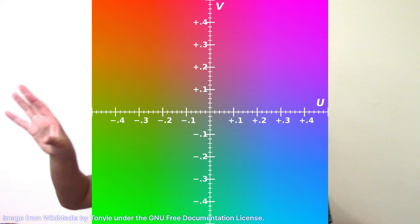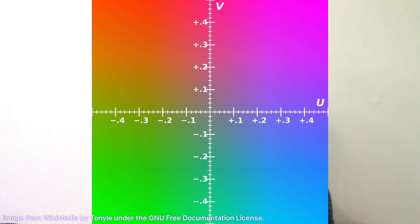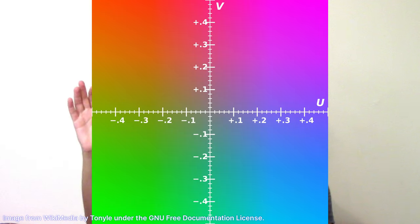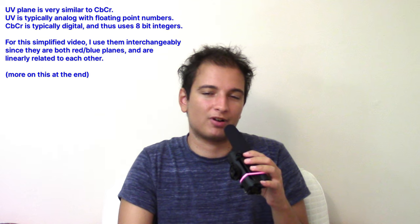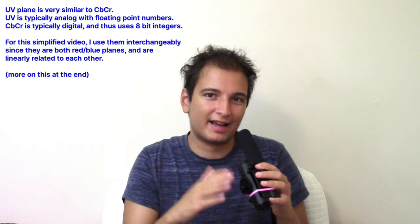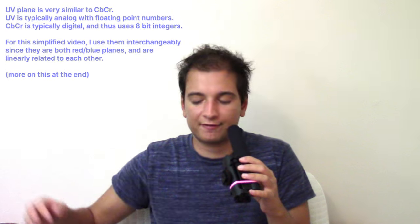So then, what about U and V? UV is often defined as the U-V plane. Instead of being on a scale from 0 to 255, it's represented on a plane from roughly negative 0.5 to positive 0.5. You'll lay the plane out in U and V, where one axis is the red axis and one axis is the blue axis.